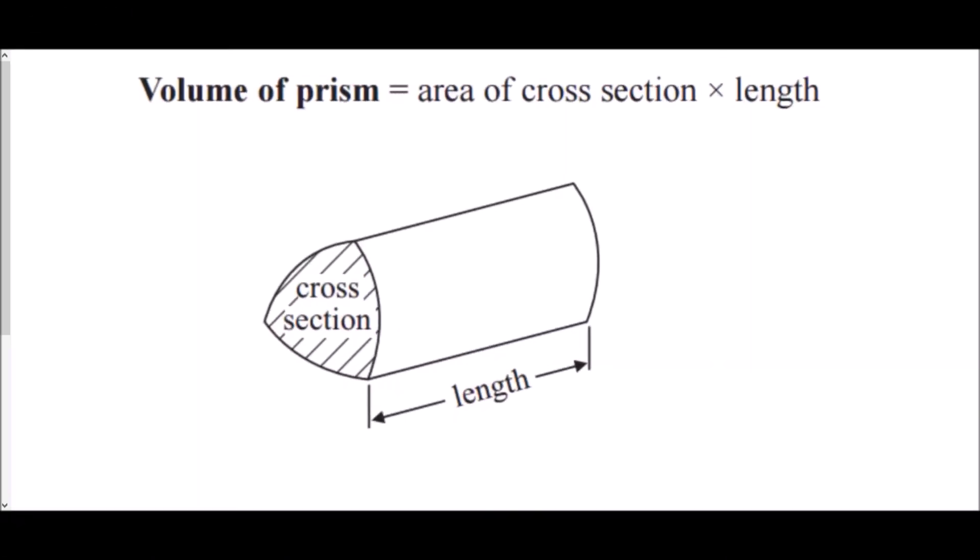I want to start this video with a little diagram that used to be provided at the front of all GCSE maths exams. It's no longer there. It's something you now need to learn and remember, and that is the formula for the volume of a prism: the area of a cross section times the length.